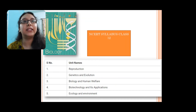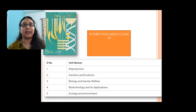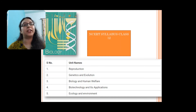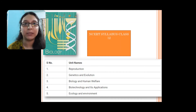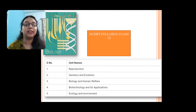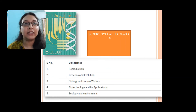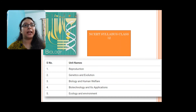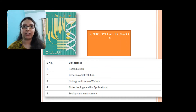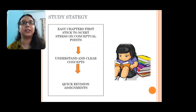चलिए अब देख लेते हैं कि class 12 NCERT में क्या syllabus है। इसमें हम लोग अभी ज्यादा details में नहीं जाएंगे, थोड़ा ऊपर-ऊपर देखेंगे क्योंकि यह हम लोग बाद में पढ़ने वाले हैं। सबसे पहले आता है reproduction, उसके बाद genetics and evolution, biology and human welfare, biotechnology and its applications, और last में आता है ecology and environment।